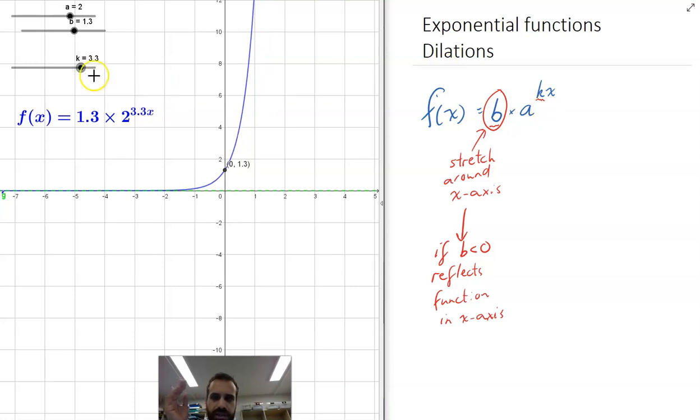And again, if we're doing something to the x-axis, it kind of does the opposite of what you'd expect. So as k increases, it moves it closer and closer, squeezes it tighter and tighter around that y-axis.